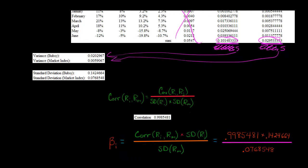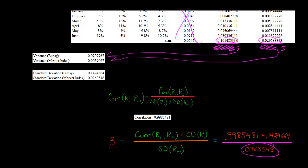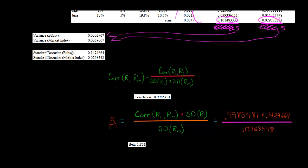Now that we have the correlation, we go back to our original beta formula. We've got the correlation of 0.9985481, and we multiply it by the volatility for Bubsy — firm I — then divide by the volatility for the market return. Plugging in the standard deviation for Bubsy and the standard deviation for the market returns, if you multiply those two together and divide, you end up with a beta of 1.851. So our beta is 1.851. What does that mean? If the market return were to increase by 1%, we would expect Bubsy's return to go up by 1.851%.